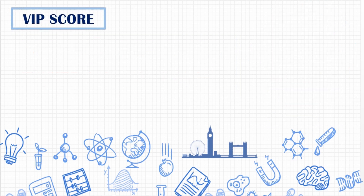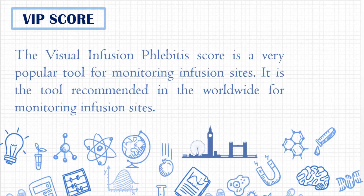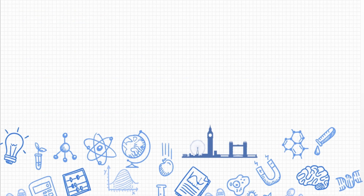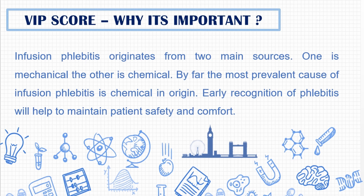To give a brief introduction about the VIP score, it was recommended by the Royal College of Nursing UK in 2006 by Gallant and Shawls for monitoring infusion sites, and it determines the appropriate discontinuation of peripheral IV catheters. The VIP score is important to identify phlebitis, which is inflammation of a vein near the surface of the skin. It occurs either mechanically or chemically — most commonly through chemical origin because of concentrated drugs and fluid, and minimally through mechanical causes such as patient movement and accidental force applied to the site. Through the VIP score we can identify phlebitis at the earliest stage, promoting patient safety and comfort.